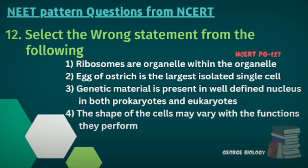Question twelve: Select the wrong statement. Options: ribosomes are organelles within the organelle; egg of ostrich is the largest isolated single cell; genetic material is present in a well-defined nucleus in both prokaryotes and eukaryotes; the shape of cells may vary with the functions they perform. The answer is the third option — genetic material is present in a well-defined nucleus in eukaryotes, not in prokaryotes.